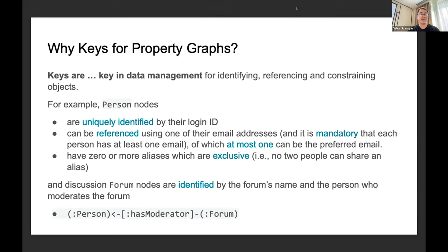Keys are for identifying, referencing, and constraining objects. For example, thinking in the context of property graphs, if we have person nodes, they can be uniquely identified by a login ID. They can be referenced using one of their email addresses, and it's mandatory that each person has at least one email, of which at most one can be a preferred email.